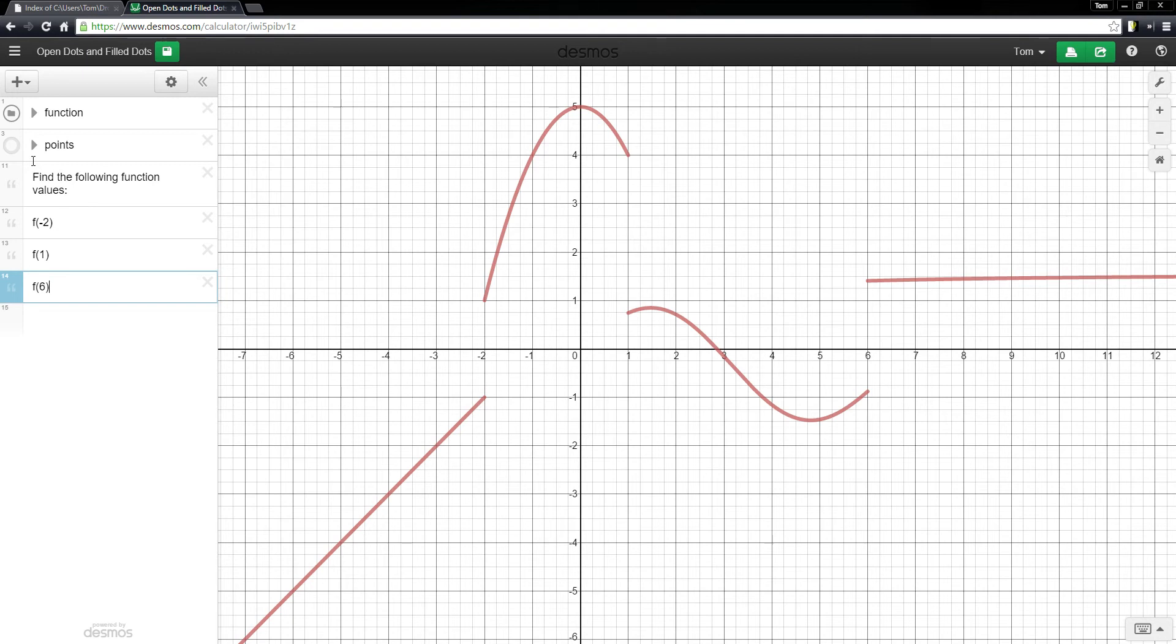So in order to solve those problems, what we'll do is put open dots and filled dots on the graph. And then it's a lot easier to tell what the function values are at those places where the graph is disconnected like this.